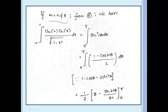If m equal to n: the integral from minus 1 to 1 of Um(x) Un(x) divided by root(1 minus x squared) dx equals integral from 0 to π of sin² nθ dθ. We apply the formula: 1 minus cos 2θ equal to 2 sin² θ.